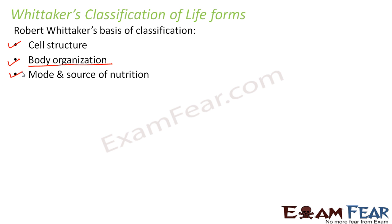The third one was mode and source of nutrition. For every living organism, its basic necessity is food. Whittaker said that how living organisms get their food and what kind of food they feed upon is also one parameter to classify life forms. So together with these three parameters, he classified living organisms into five groups.